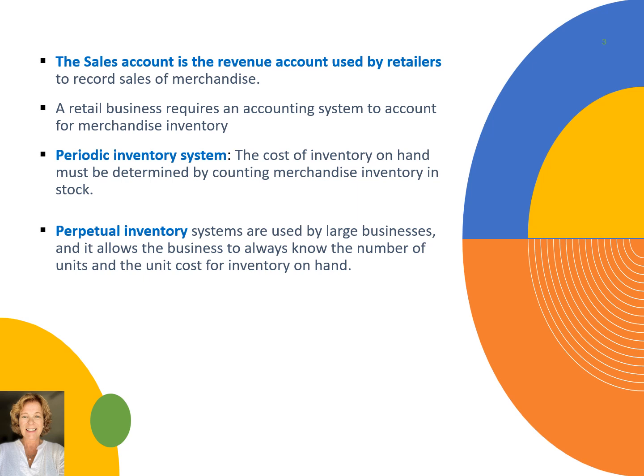We will also be studying the periodic inventory system. The cost of inventory on hand must be determined by counting merchandise, inventory, and stock. That is why it is called the periodic inventory system, because the business periodically counts what it has in inventory. Larger businesses use a perpetual inventory system, which allows the business to know the number of units and the unit cost for inventory on hand at all times.